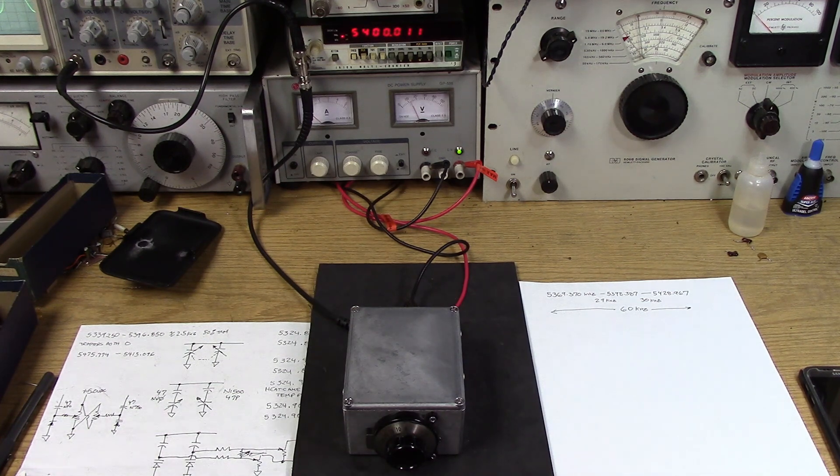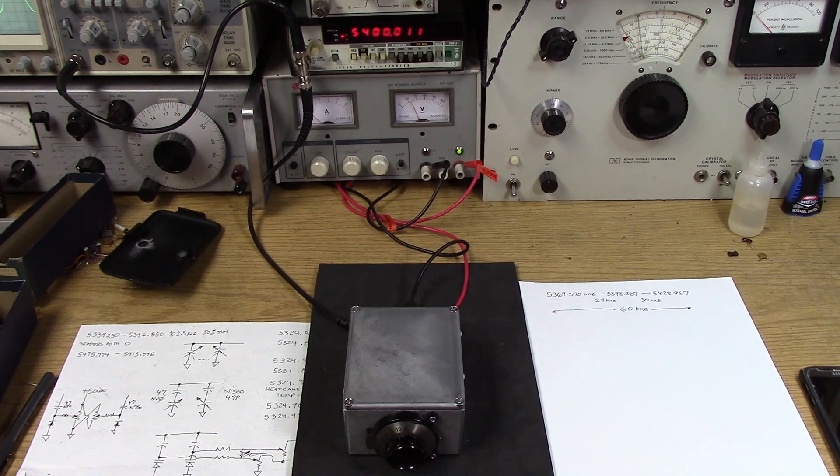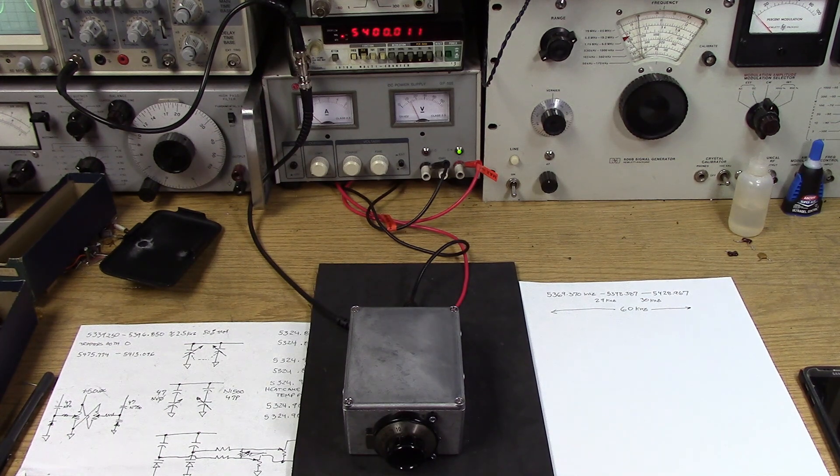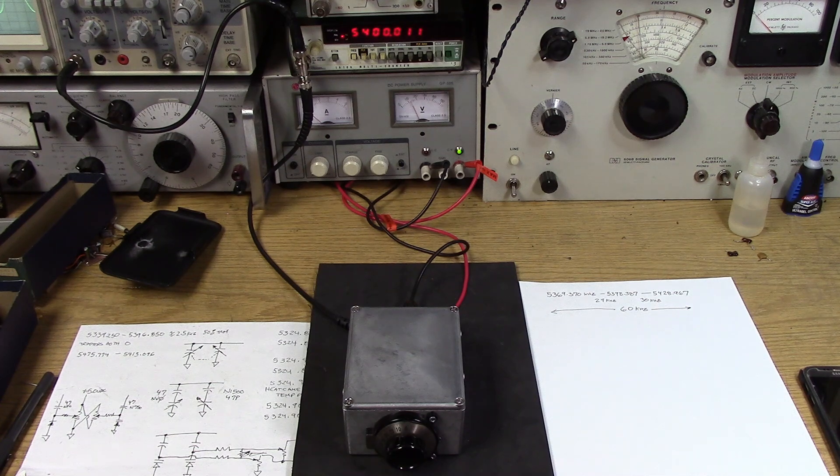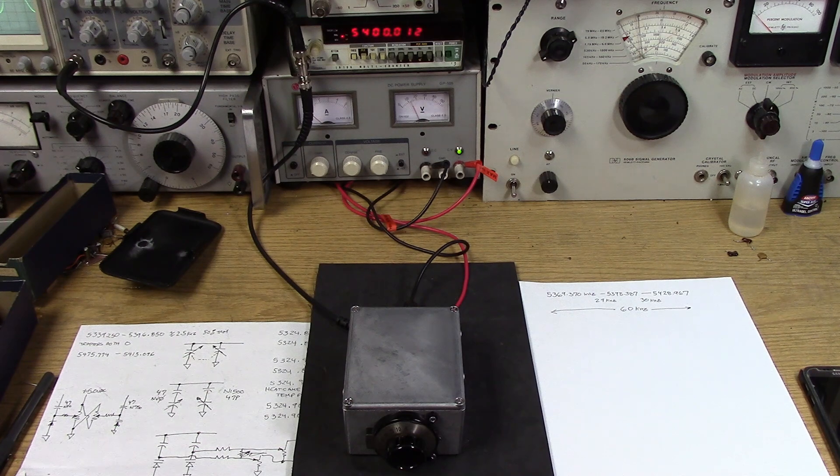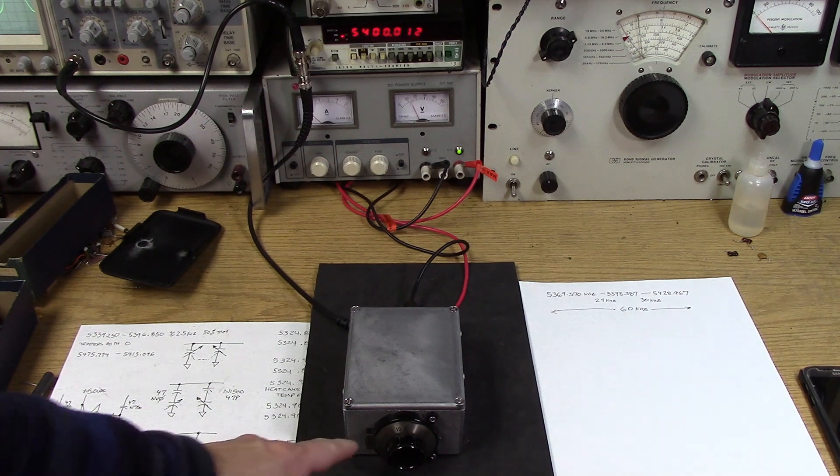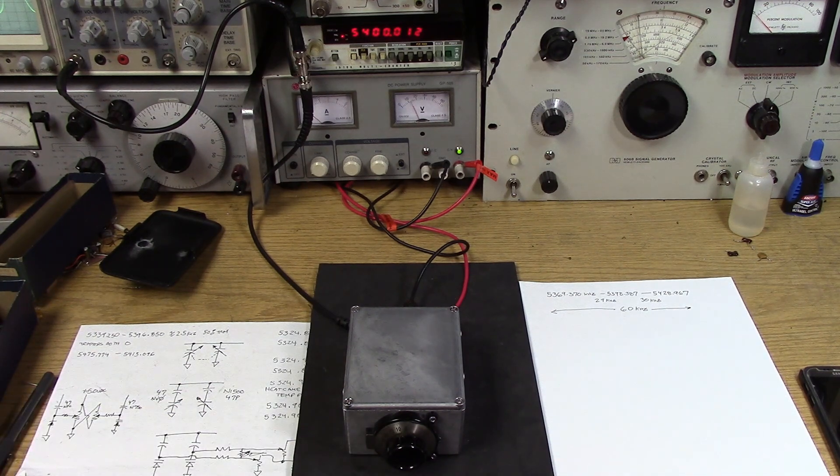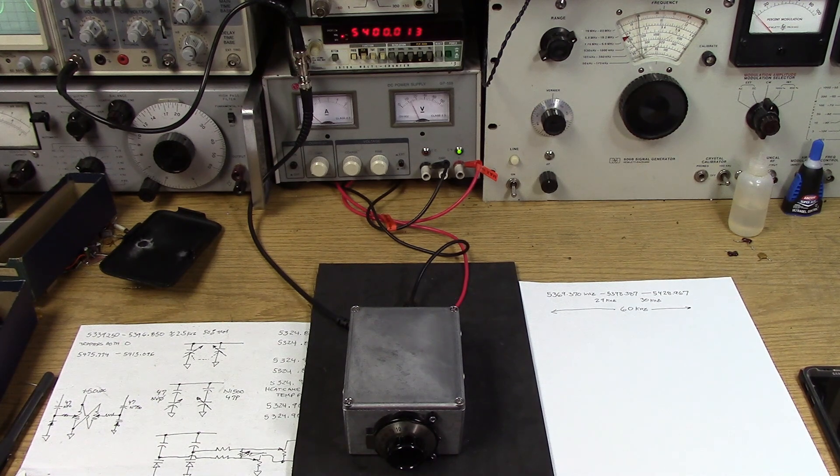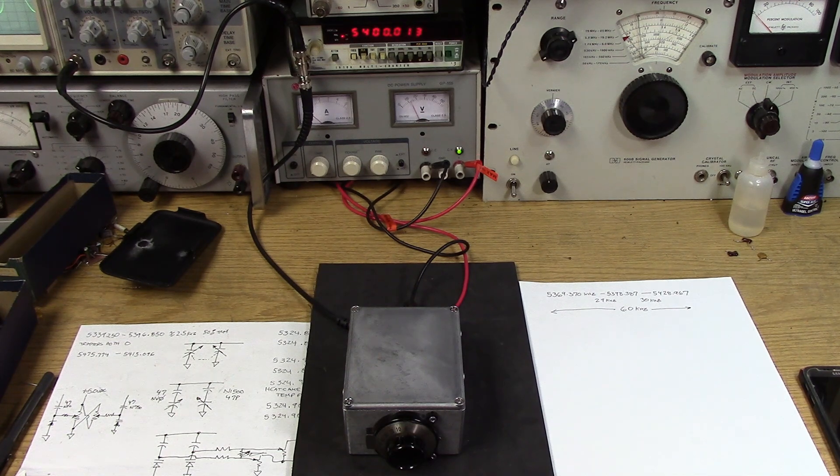So it looks like this thing actually tuned 60 kilohertz from end to end, from 5369 up to 5428. That range is well balanced, it's very linear because the capacitor we're tuning is so small compared to the fixed cap that's on the VFO. It's about 29 kilohertz to the 50 point and 31 kilohertz to the 100 percent, so it's pretty well balanced.